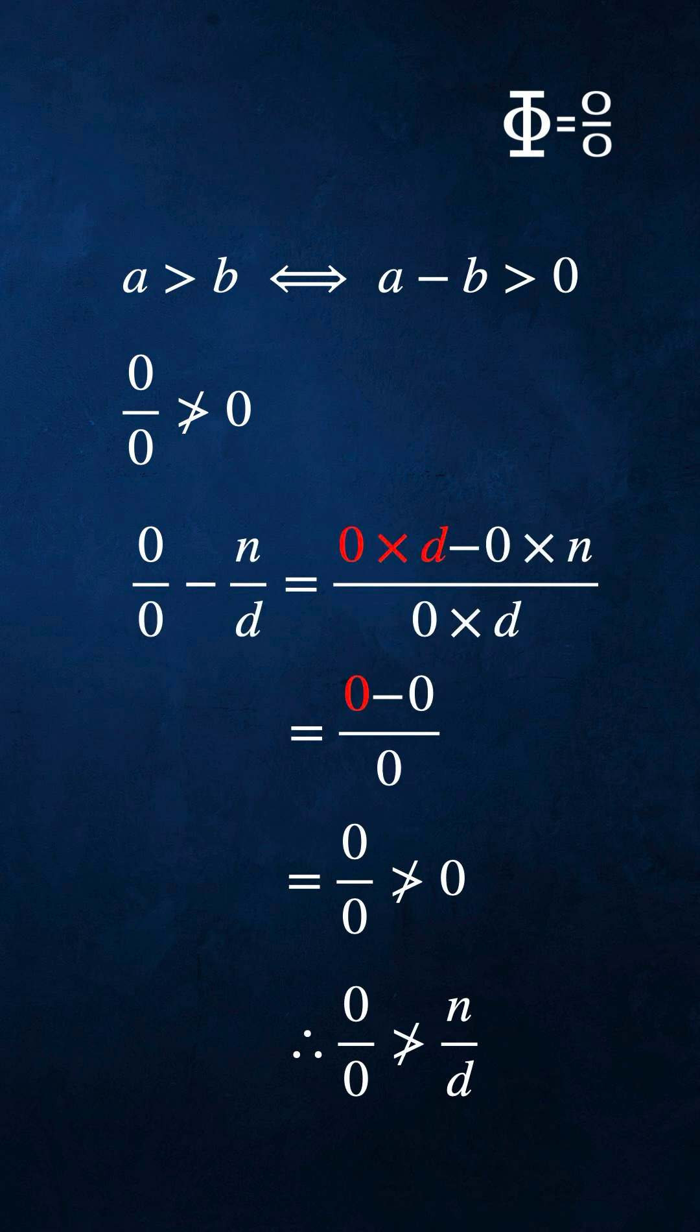0 times d equals 0. 0 times n equals 0. 0 minus 0 equals 0.